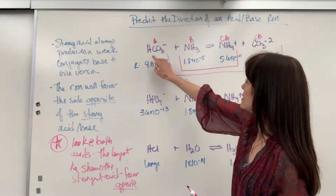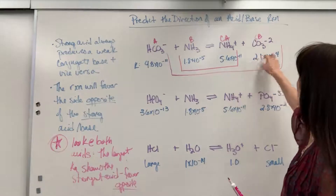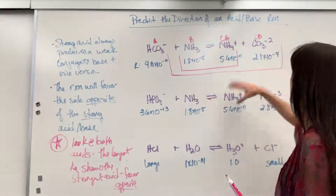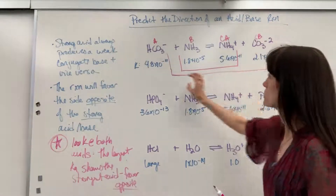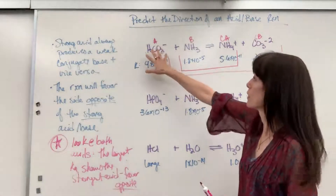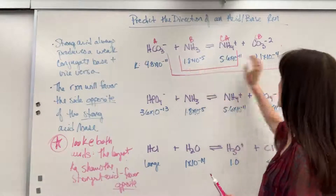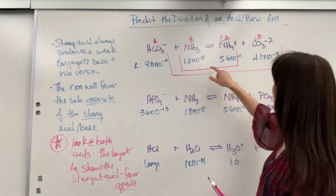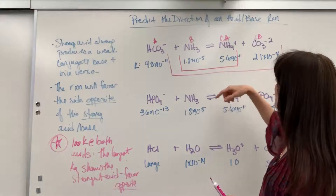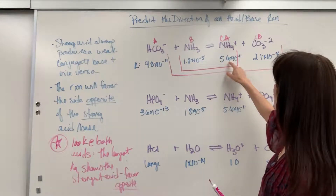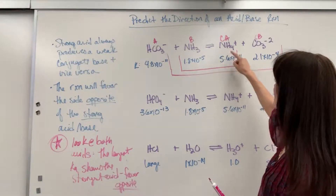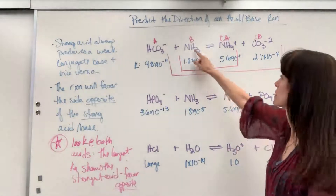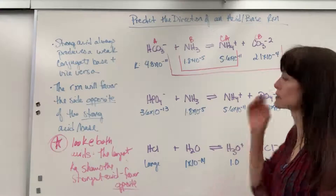Looking at this acid-conjugate base pair, the base is much stronger than the acid. So this is the strong base producing the weak acid, or going the other way, the weak acid produces a strong base. We have 10 to the minus 5 and 10 to the minus 11 — a weak acid producing a strong base, or that strong base producing the weak acid.